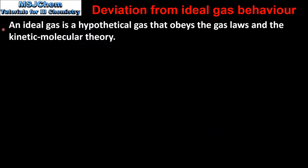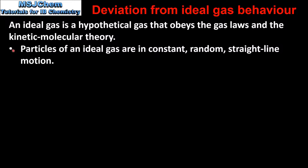An ideal gas is a hypothetical gas that obeys the gas laws and the kinetic molecular theory. The kinetic molecular theory states the following: particles of an ideal gas are in constant, random, straight line motion.